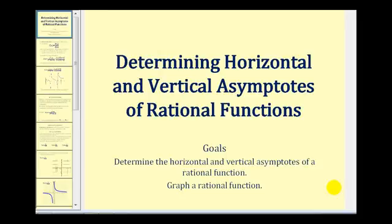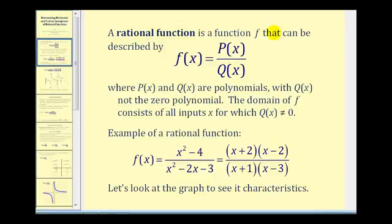Welcome to a lesson on determining the horizontal and vertical asymptotes of a rational function. A rational function is a function that can be described as a quotient of two polynomials where q of x is not the zero polynomial, and the domain would be all values of x that don't make q of x equal to zero. Here's an example where the numerator is x squared minus four and the denominator is x squared minus two x minus three.